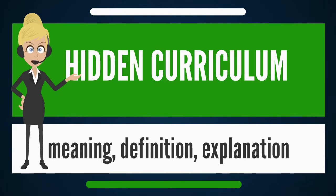Hidden curriculum often refers to knowledge gained in primary and secondary school settings, usually with a negative connotation where the school strives for equal intellectual development as a positive aim. In this sense, a hidden curriculum reinforces existing social inequalities by educating students according to their class and social status. The unequal distribution of cultural capital in a society mirrors a corresponding distribution of knowledge among its students.